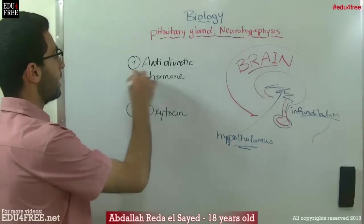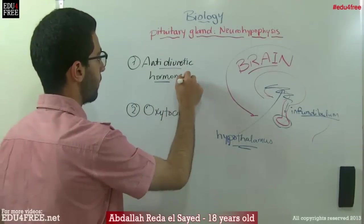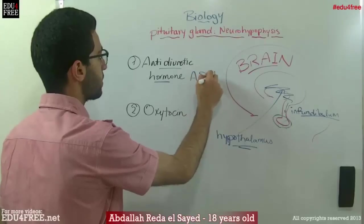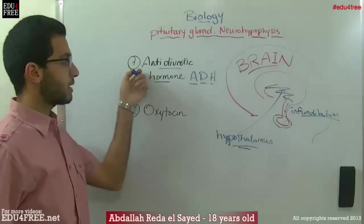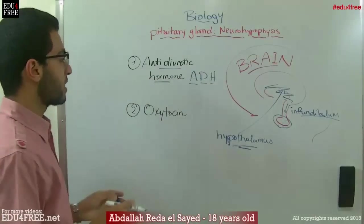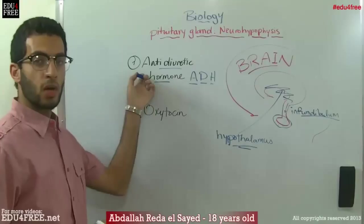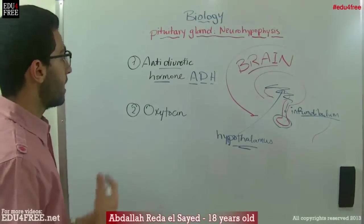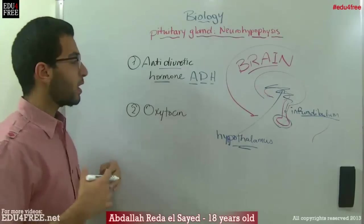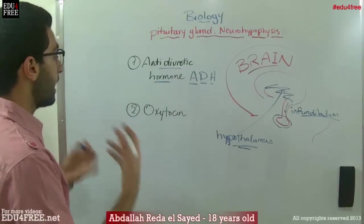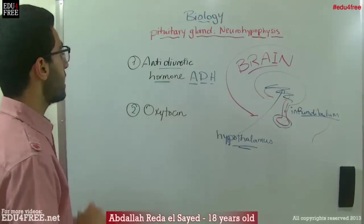So the first hormone is called the antidiuretic hormone, which we refer to as ADH. Antidiuretic means that it decreases the amount of urine excreted. It does that by stimulating the reabsorption of water through the kidneys.